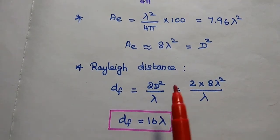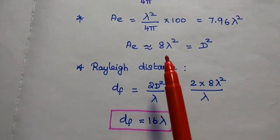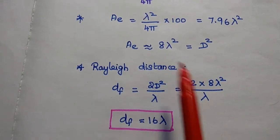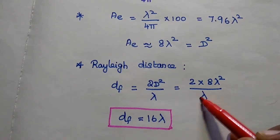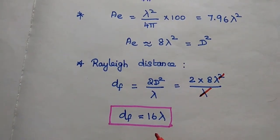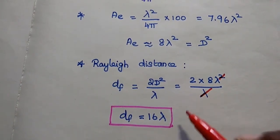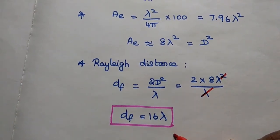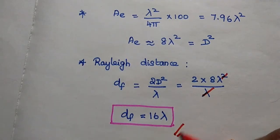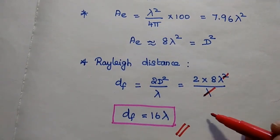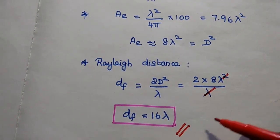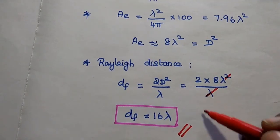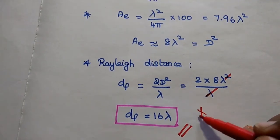Substituting D² = 8λ² into df = 2D² / λ gives df = 2 × 8λ² / λ = 16λ. So the Rayleigh distance of the given square antenna with 20 dB gain is 16λ. This is an important problem.